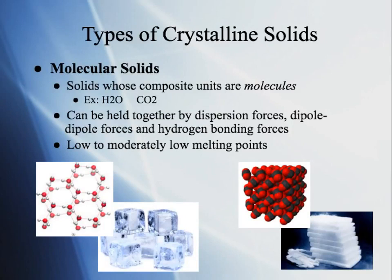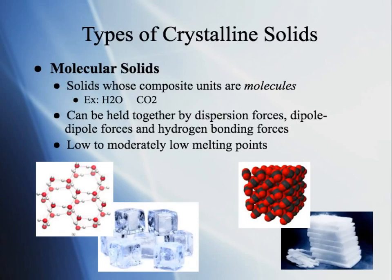The last section is about solids and crystalline solid structures. There are several types. First: molecular solids — these are solids whose composite units are molecules, essentially covalent compounds. They're held together by dispersion forces or perhaps dipole-dipole or hydrogen bonding, so they have low to moderately low melting points compared to other crystalline solids.